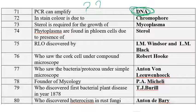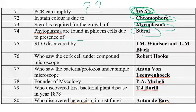The stain color in bacteria is due to the presence of chromatophore — chromos means color. Sterol is required for the growth of mycoplasma and phytoplasma. Phytoplasma is restricted to phloem cells because the amount of sterols is very high in phloem cells. RLO (Rickettsia-like organisms) was discovered by Winslow and Black in 1972.